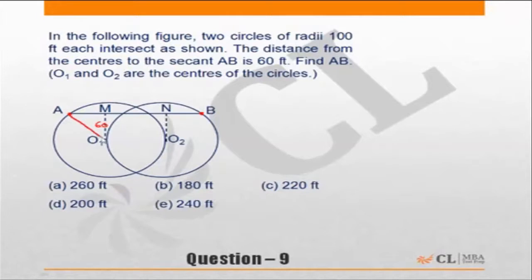That means we know the radius is 100. If this is 100 and this is 60, then this must be 80 — a Pythagorean triplet. So this side is also going to be 80.